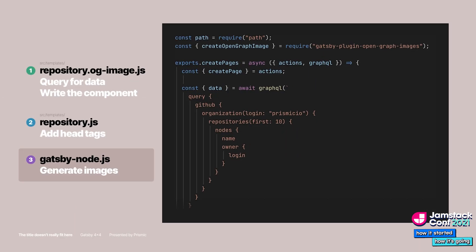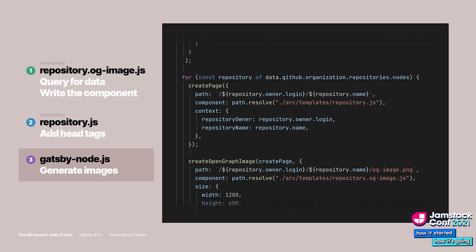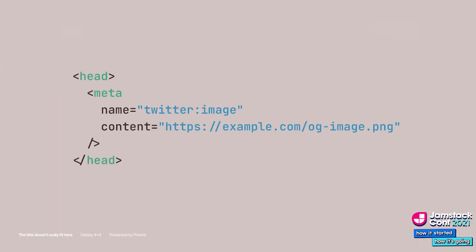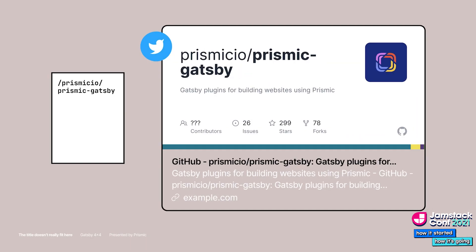The last step is to get those images generated. We use the OpenGraph Images plugin inside gatsby-node.js. First, we query our repository information again. Then, for each repository found, we generate its page and related OpenGraph images using the function provided by the plugin. Once in production, our website will have the necessary meta tags configured properly, and when shared on Twitter or any social media, our beautiful card will get embedded.